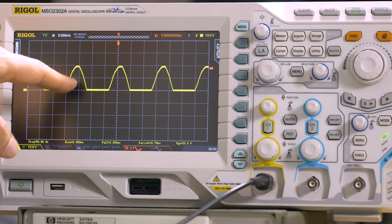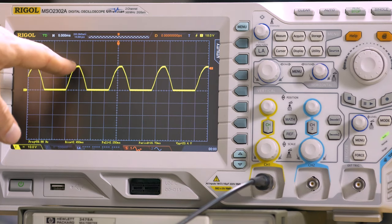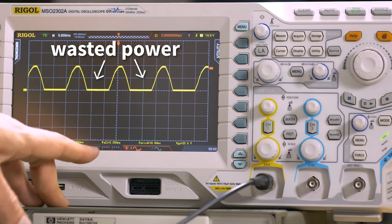A half-wave rectifier is cheap and easy to build. However, it is rarely used due to its disadvantages. First, its efficiency is low. Only 40.6% of the AC power gets converted to DC power available to the load, so there's a lot of power wasted.